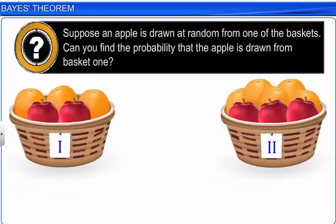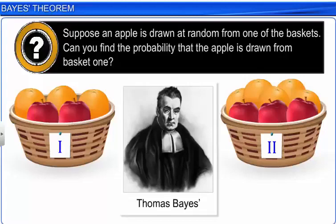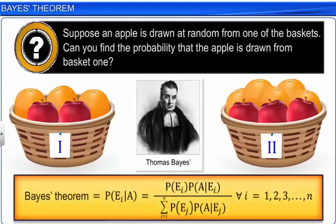To solve such types of problems, in 1763, a mathematician Thomas Bayes developed a new formula by using conditional probability. This new formula is called Bayes' theorem. Before proving the theorem and discussing it in detail, let's look at some definitions and basic theorems.